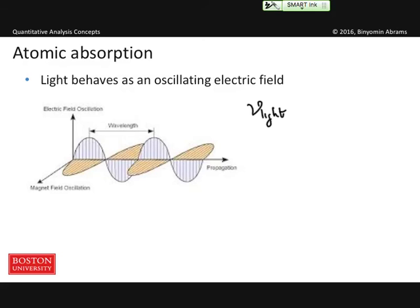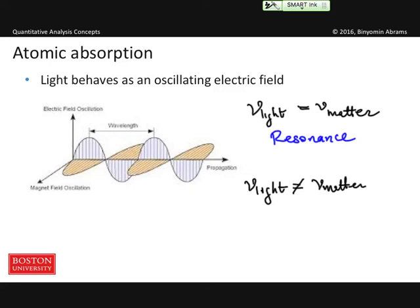One of two things is possible. Either that frequency of that light will be equal to some fundamental frequency in our matter, and that condition will be called resonance. And when resonance occurs, light can be absorbed by the matter. Alternately, if the frequency of light is not equal to any fundamental frequency in the matter, this leads to transparency, or non-resonant behavior, where light will not be absorbed or emitted by the matter.